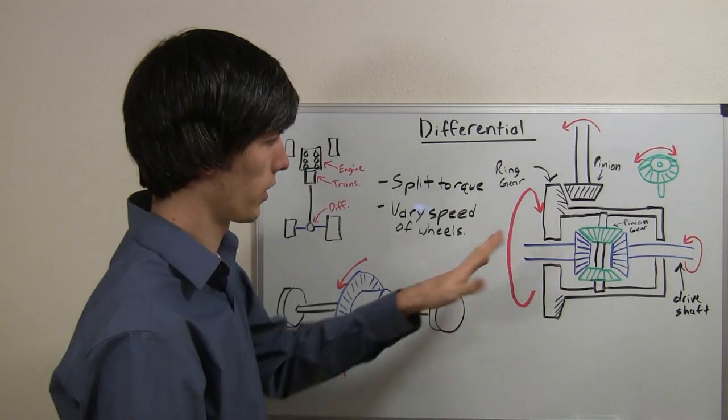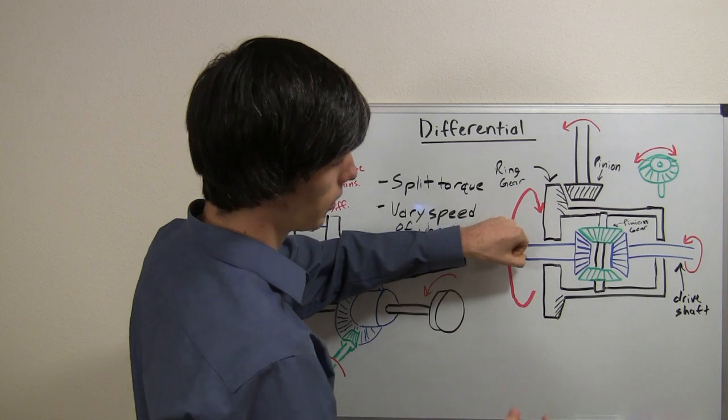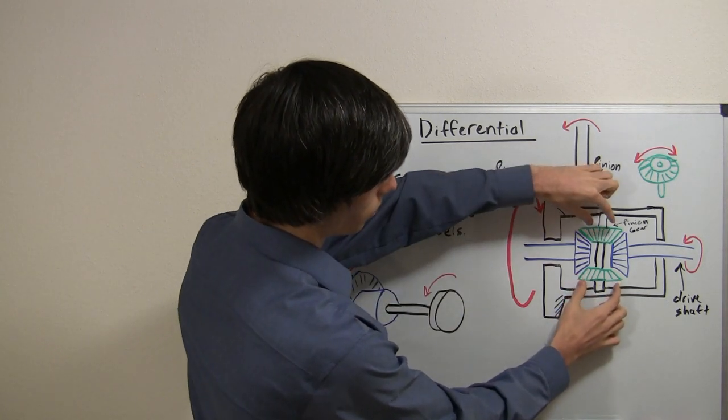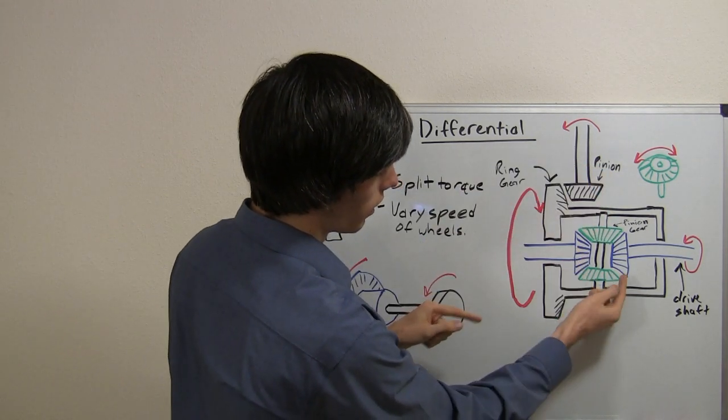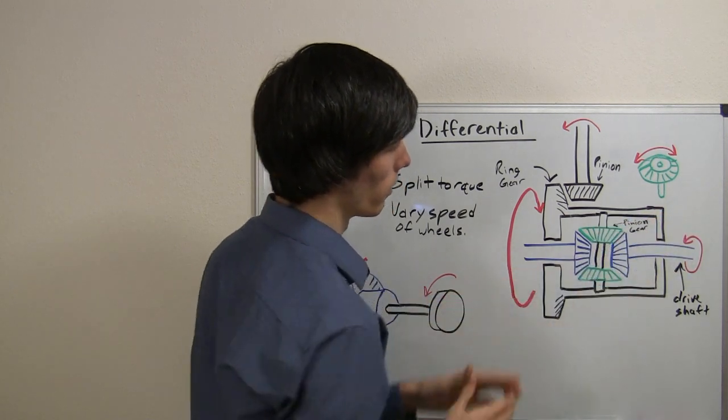But to better understand it, I just explained the extreme. So just say that one's not moving. Both of these gears rotate around this gear. And while doing so, they rotate this one over.